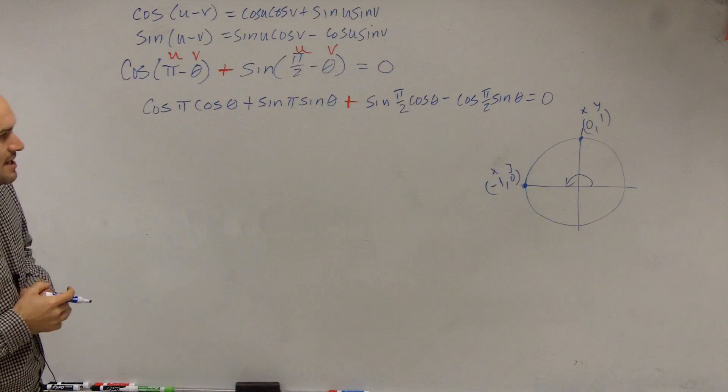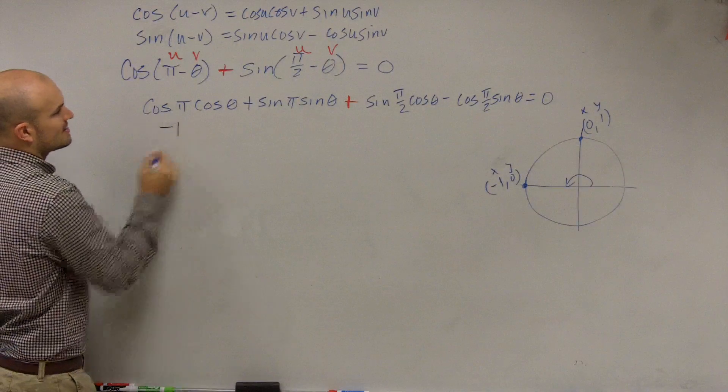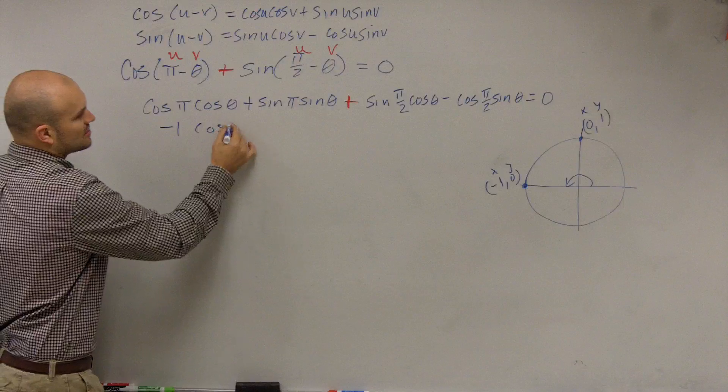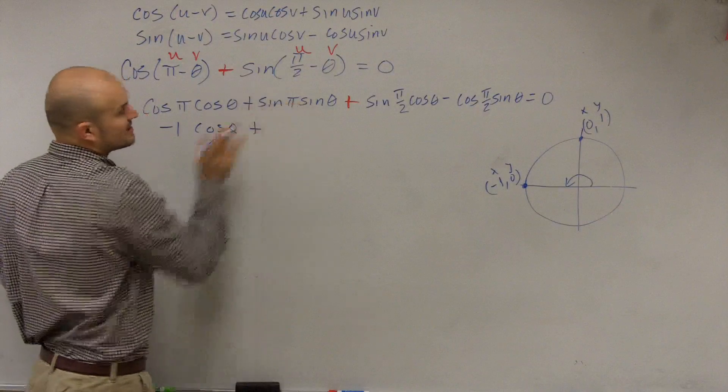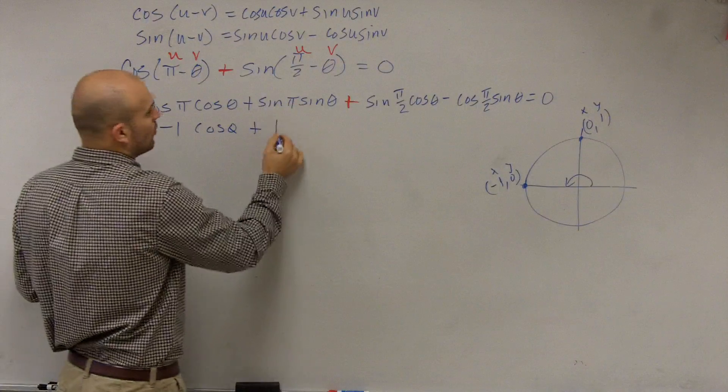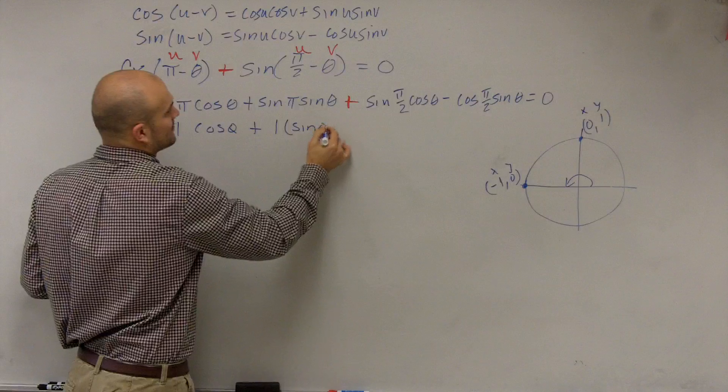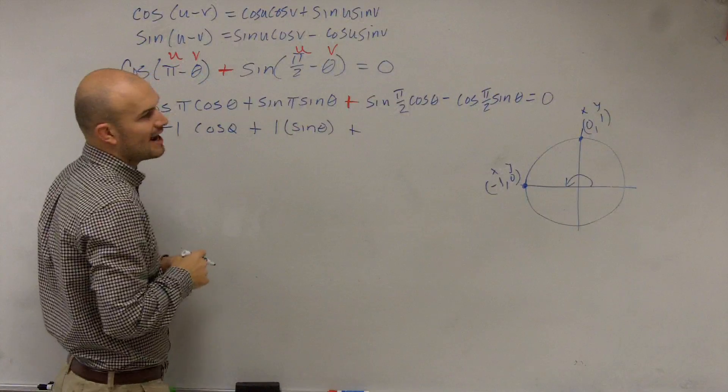And let's see, does anything immediately cancel out? No. So the cosine of pi is negative 1 times cosine of theta, plus the sine of pi, which is 0, times sine of theta, plus the sine of pi halves.